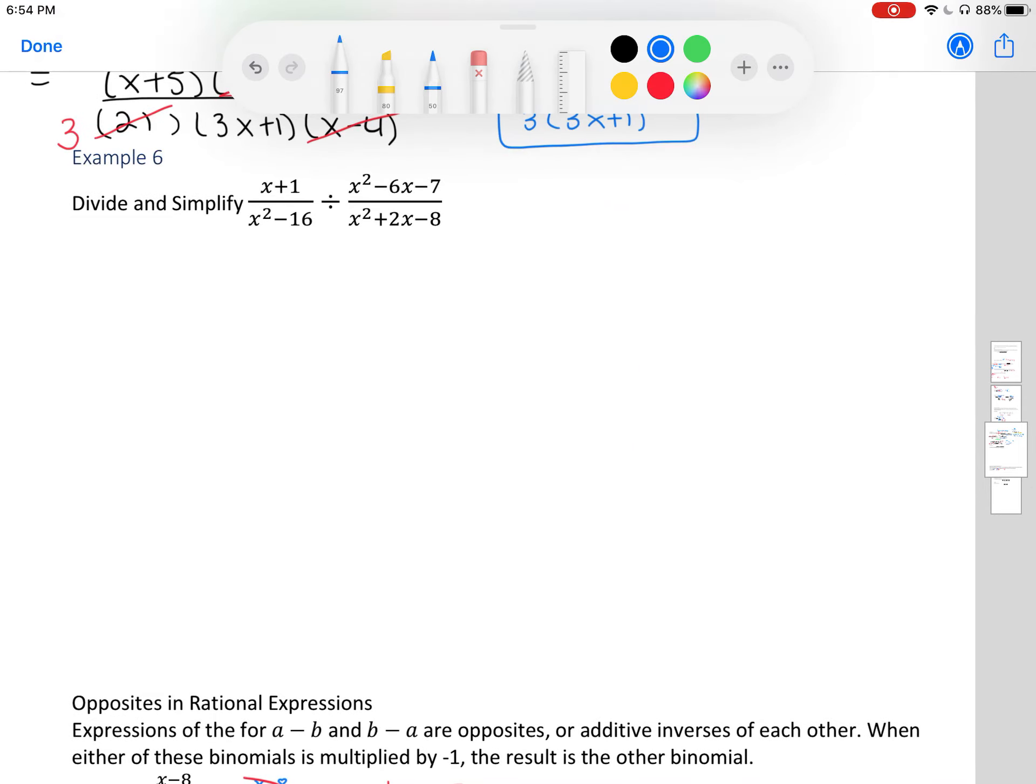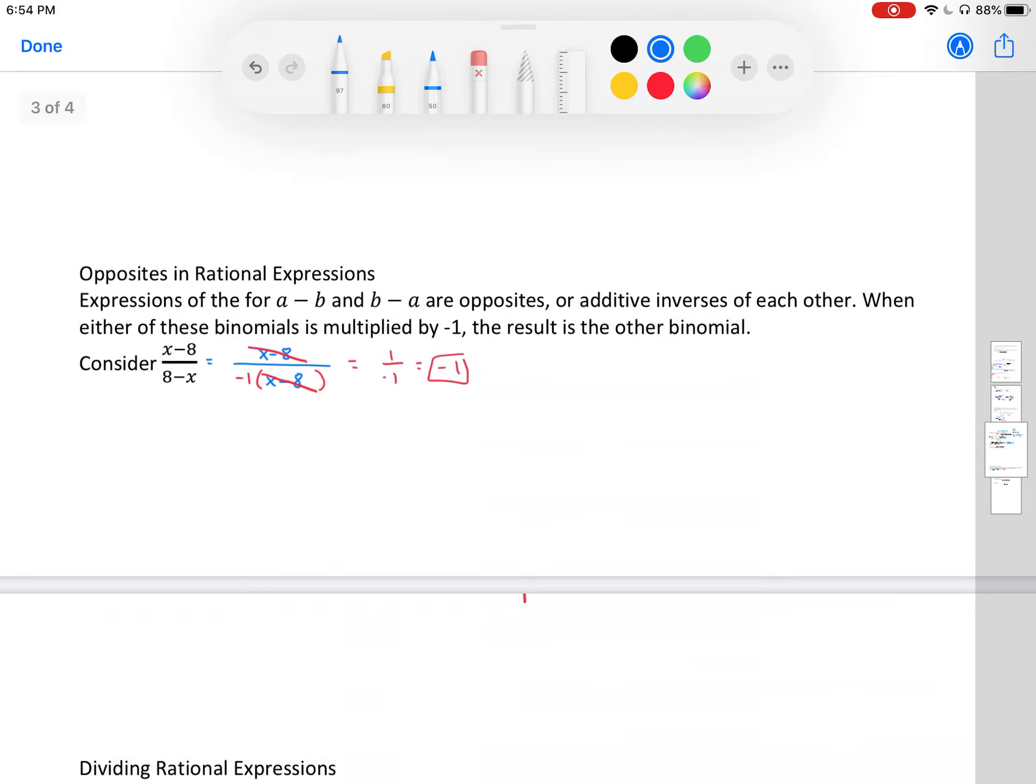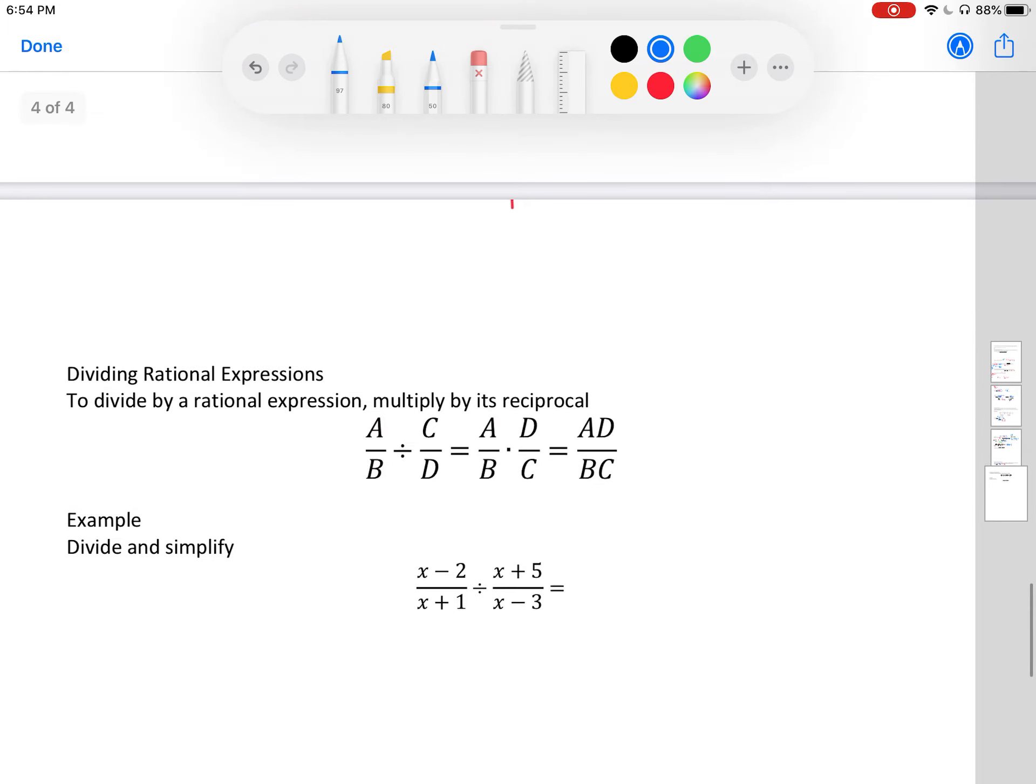Next question. So to divide fractions, you have a divided by b divided by c divided by d. And you want to flip your second fraction. It's technically called a reciprocal. And then you're able to multiply across.